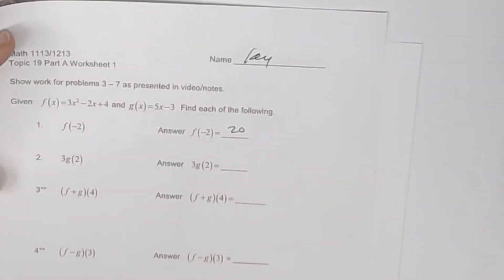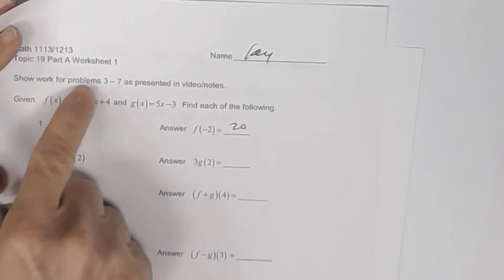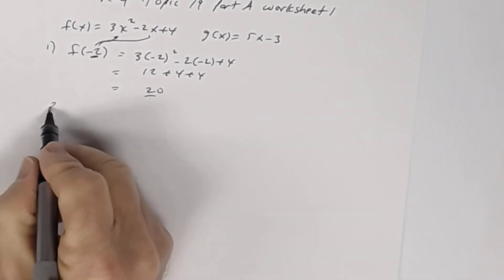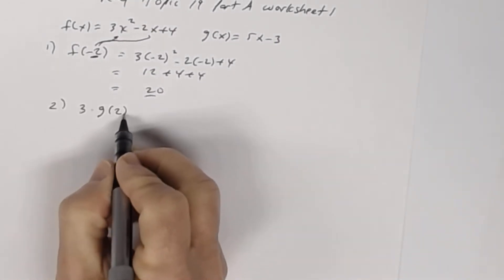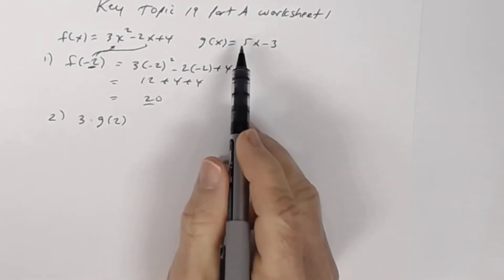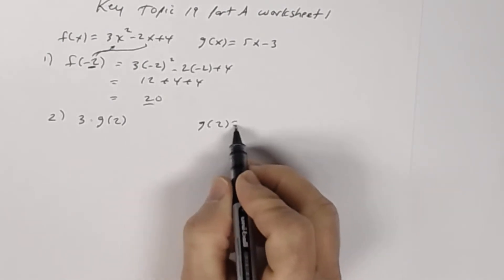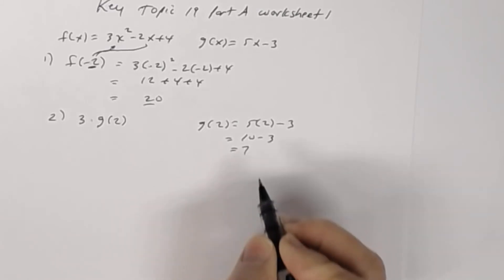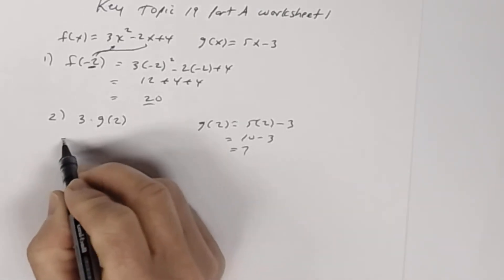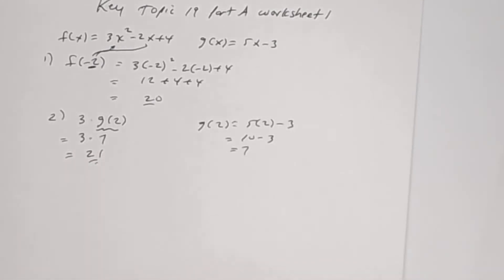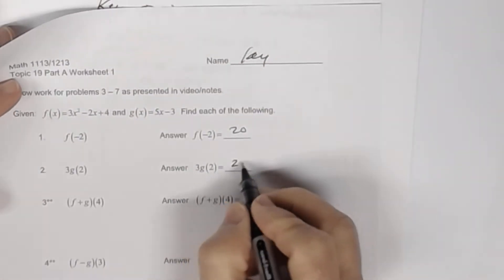So we'll put 20 here. It did say to show work for problems 3 through 7, so for 1 and 2 no work was needed. In number 2, you want to find 3 times g of 2. First you find g of 2 by going to function g of x. So g of 2 is 5 times 2 minus 3, which is 10 minus 3, which is 7. Then 3 times 7 is 21. So number 2, the answer is 21.